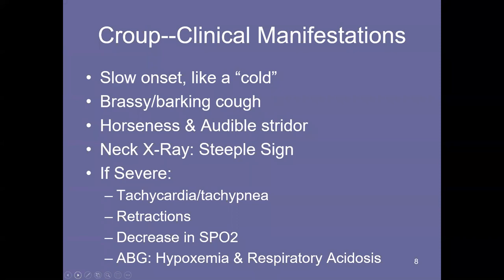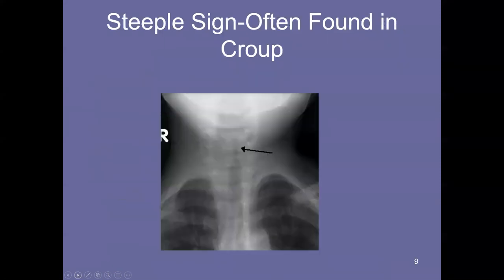However, croup can be severe, and if it is severe, it could be accompanied by tachycardia and tachypnea, retractions, a decrease in blood oxygen, and an ABG revealing hypoxemia and respiratory acidosis. The steeple sign — the arrow points to it. You're seeing the trachea narrow — a finding seen in approximately three-quarters of cases. It's really owing not to the airway itself, but to the swelling of the tissues around the airway that results in this narrowing. It looks like a steeple or pencil point, though it doesn't quite come to a pencil point.